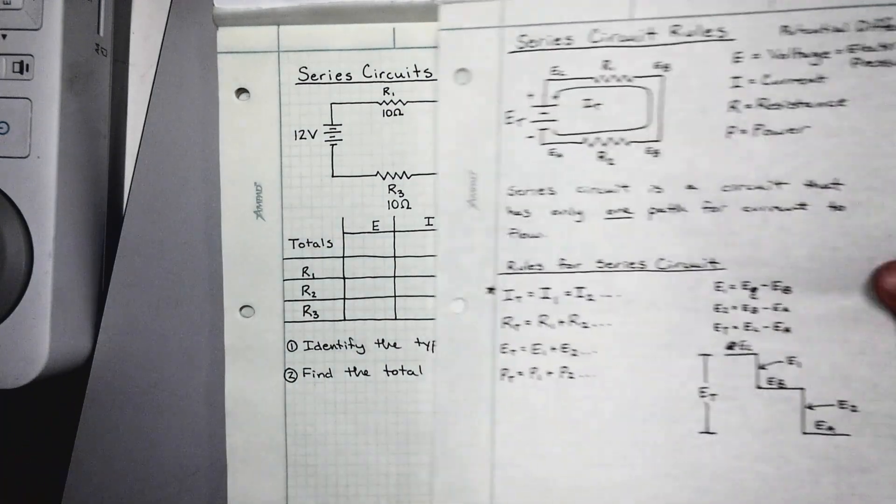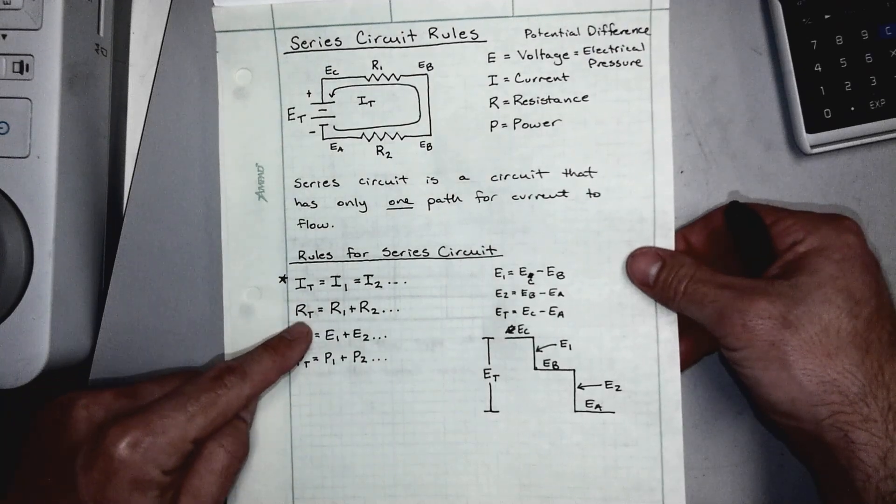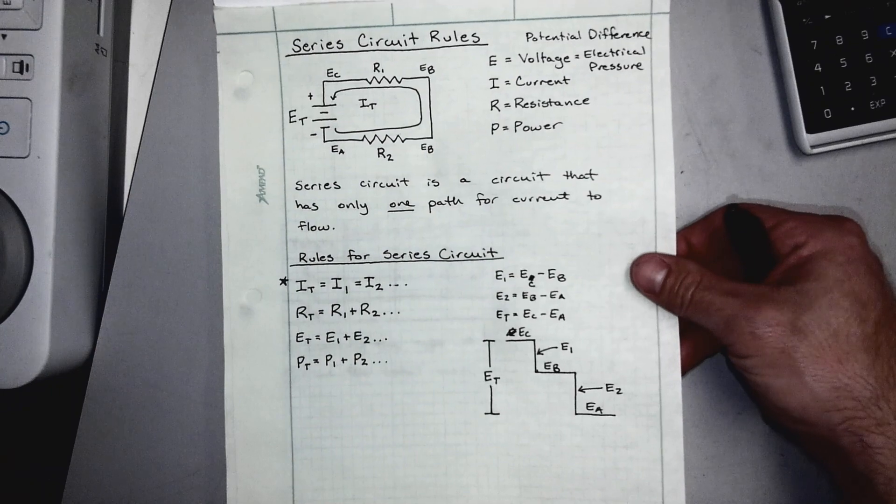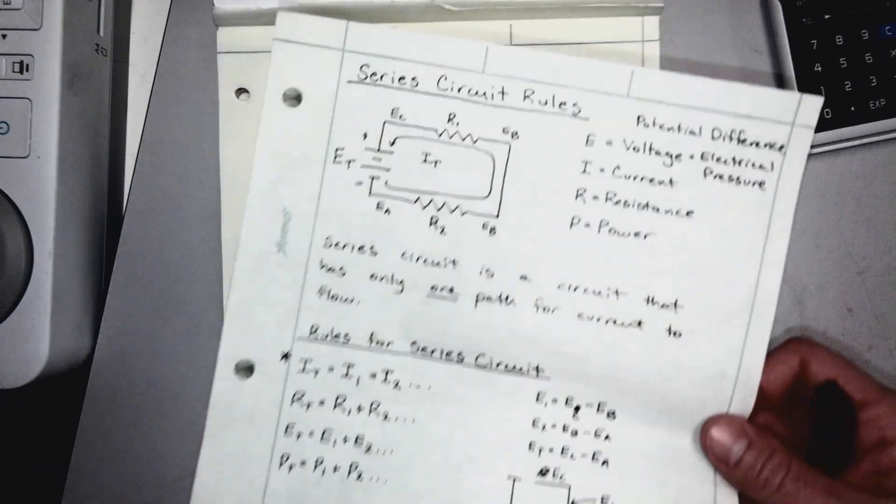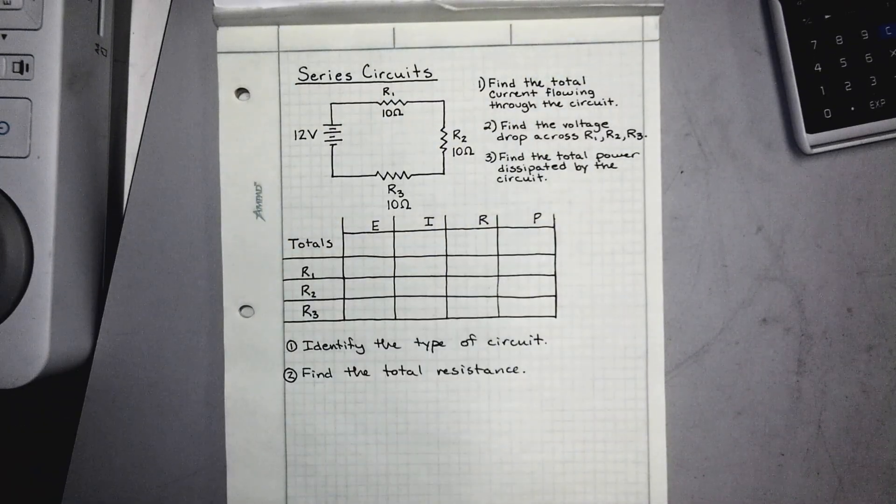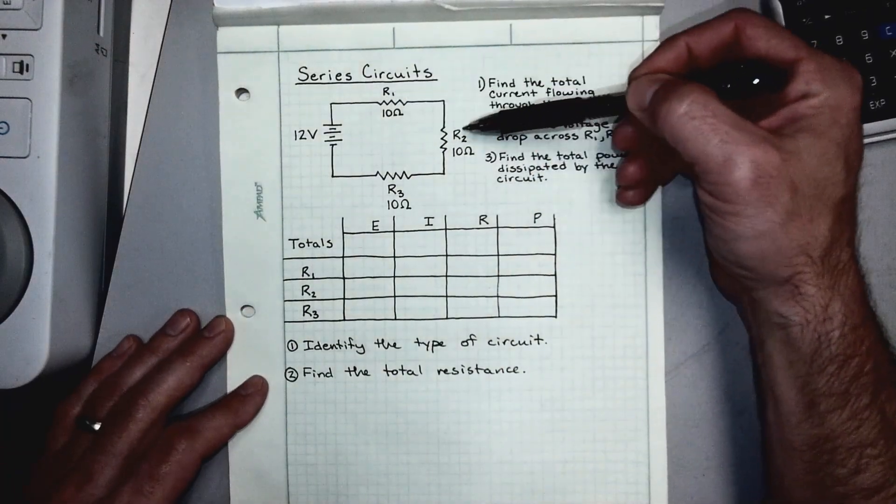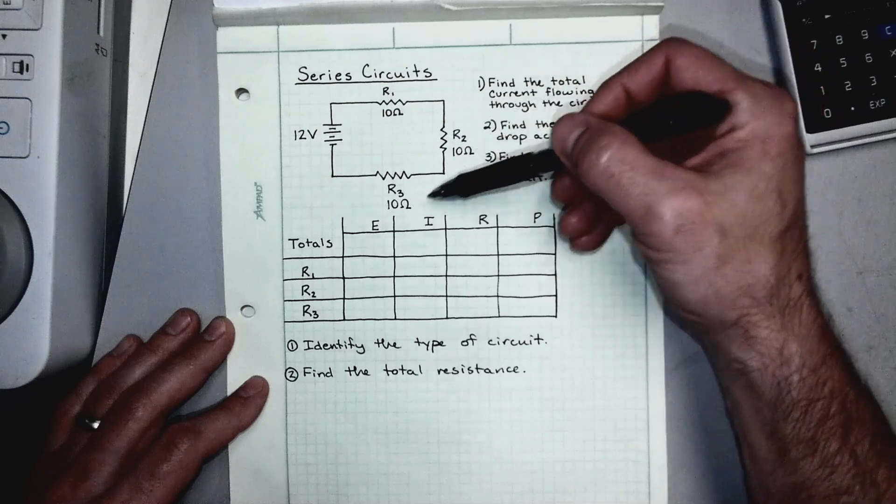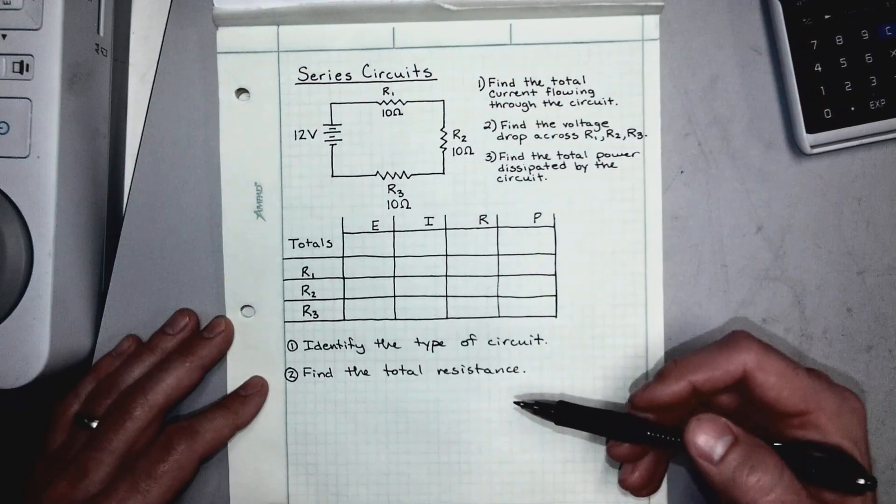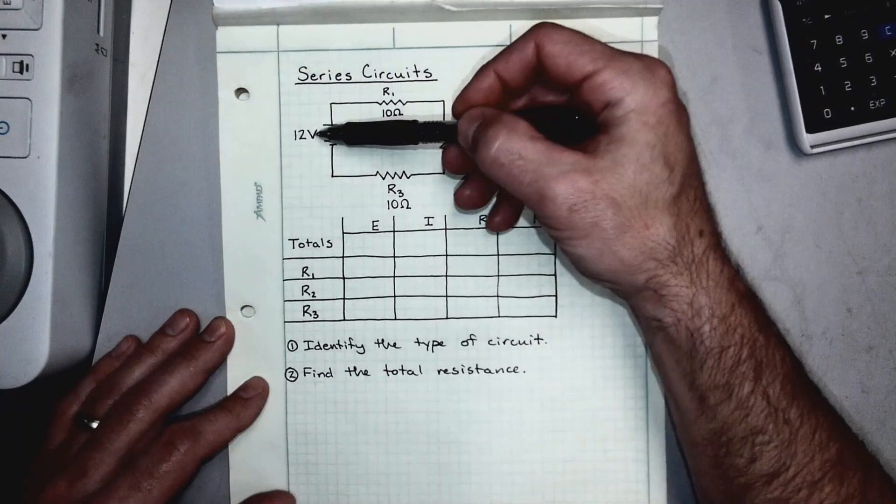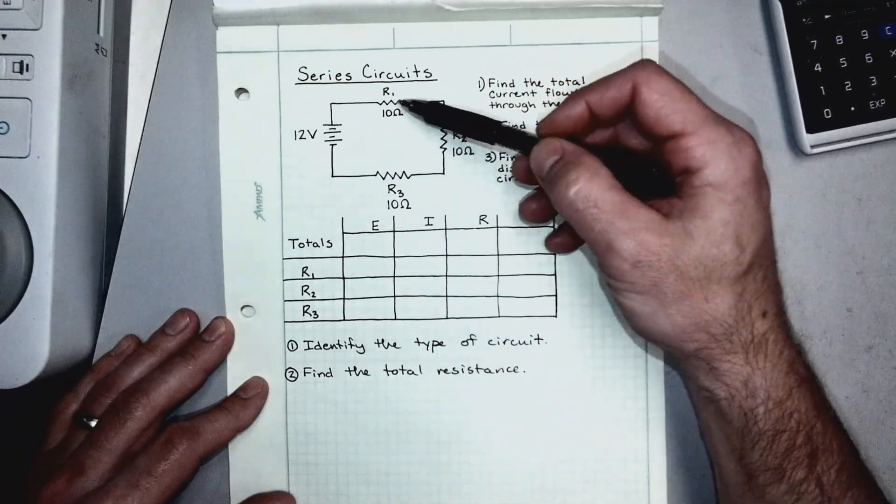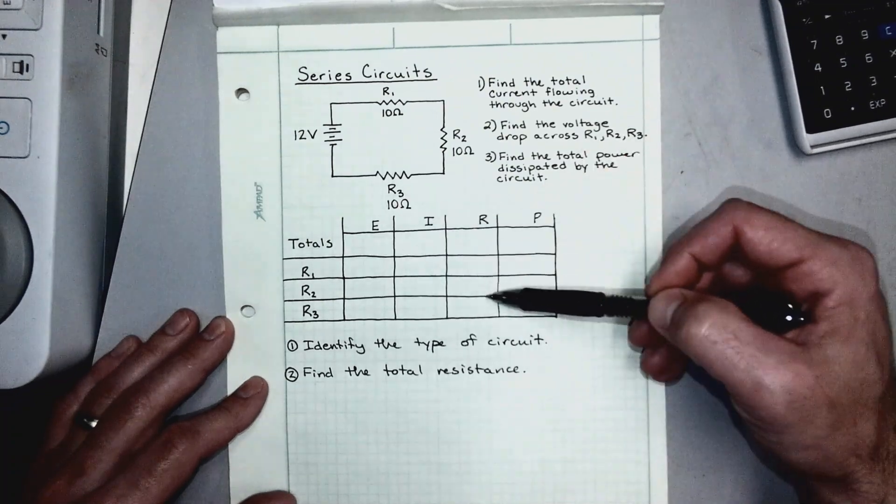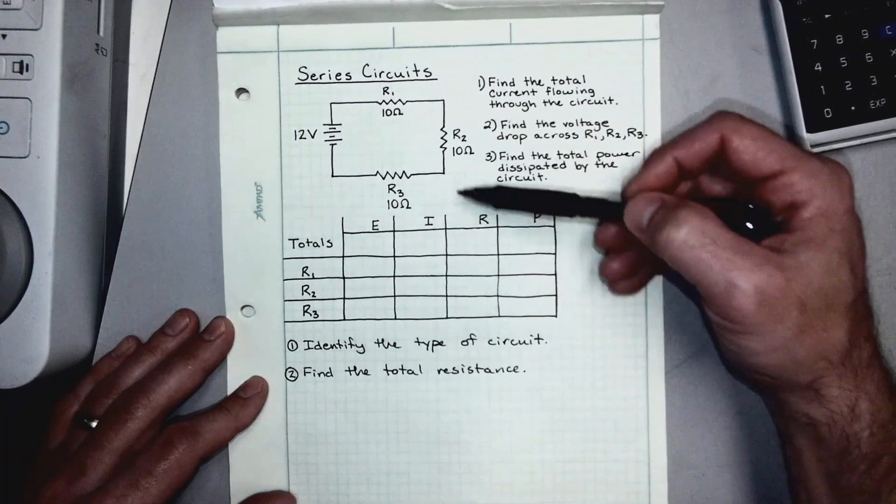So we're going to revert back to our rules for series circuits. If we look back, we see that rt is equal to r1 plus r2 plus r3 and so on and so forth for the number of resistors we have in the circuit. In this case we have three resistors—r1, r2, and r3—and we just need to add all three of these together to get our rt. We have 12 volts is et, r1 is 10 ohms, r2 is 10 ohms, and r3 is 10 ohms.